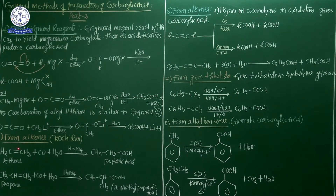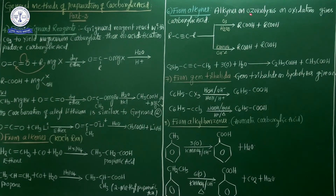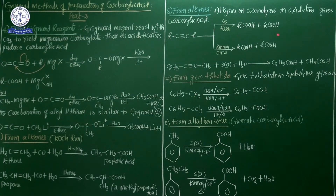Six preparation methods are successfully completed. Now we are going to discuss one more preparation method of carboxylic acid — from alkynes. Alkynes are triple-bonded hydrocarbons. Alkynes on ozonolysis or oxidation give carboxylic acid. The general equation: R-C≡C-R on ozonolysis in the presence of hydrogen peroxide gives two different types of acids. Instead of ozonolysis, KMnO₄ can also be used. It is easy to prepare carboxylic acid this way.